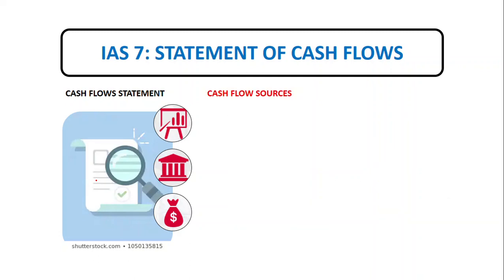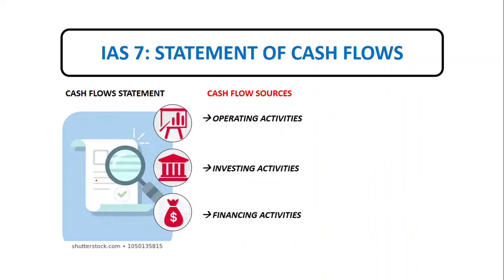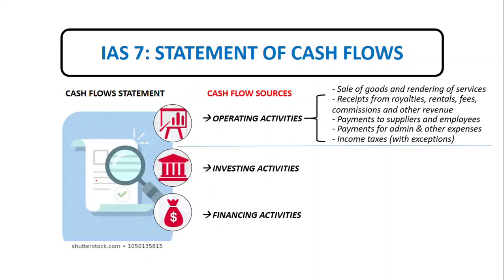There are three sources or activities for cash generation: operating activities, investing activities, and financing activities. Operating activities are cash flows derived primarily from the principal revenue-producing activities of the entity. They generally result from transactions and events that enter into the determination of net income or loss. Examples include sale of goods and rendering of services.